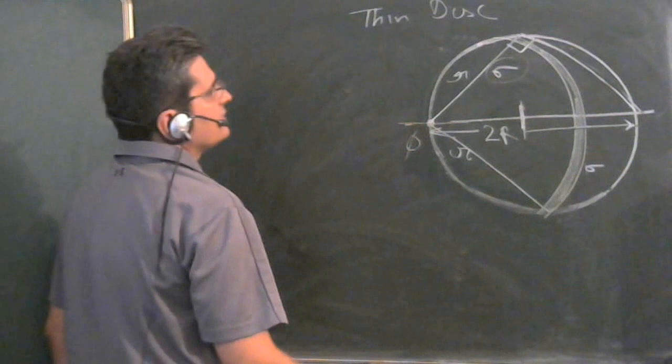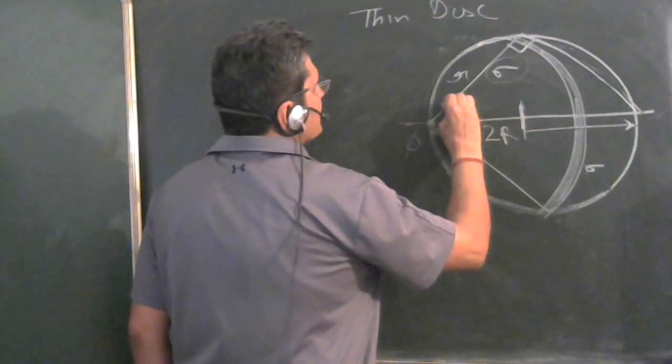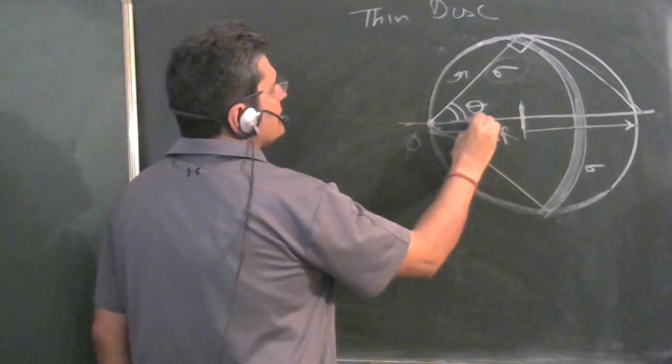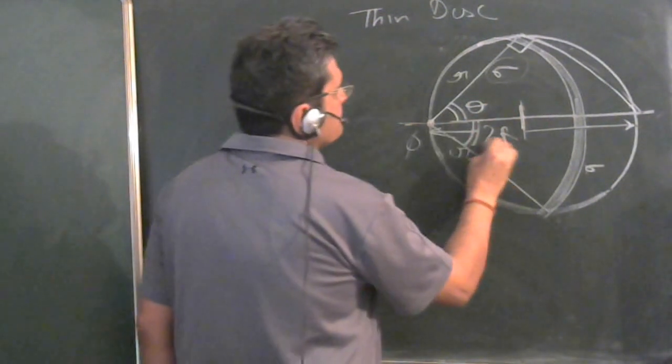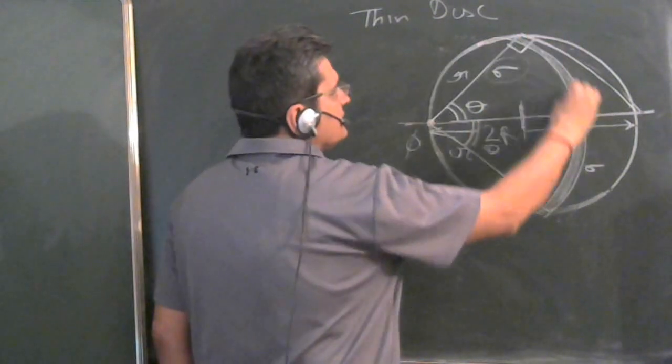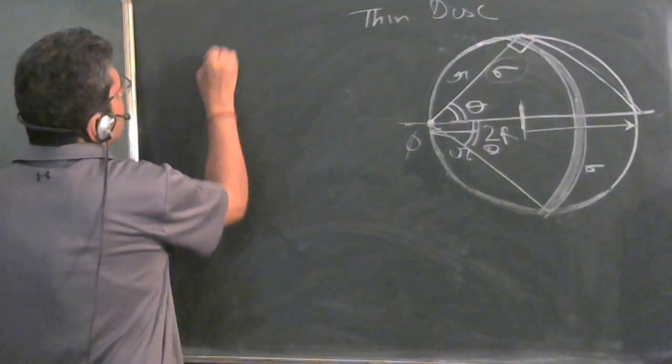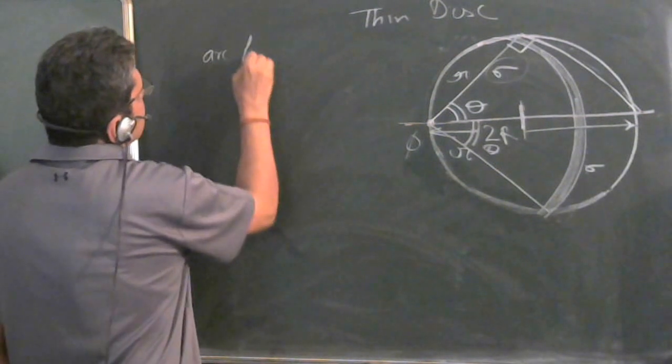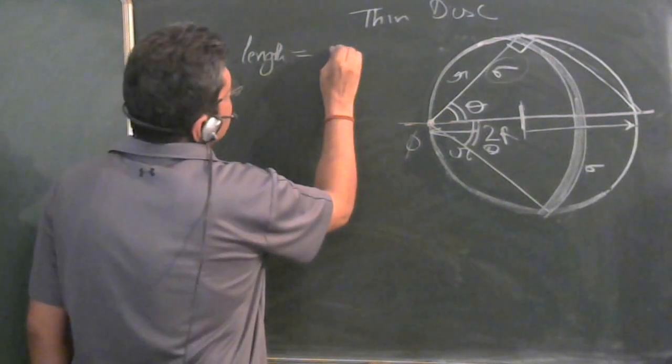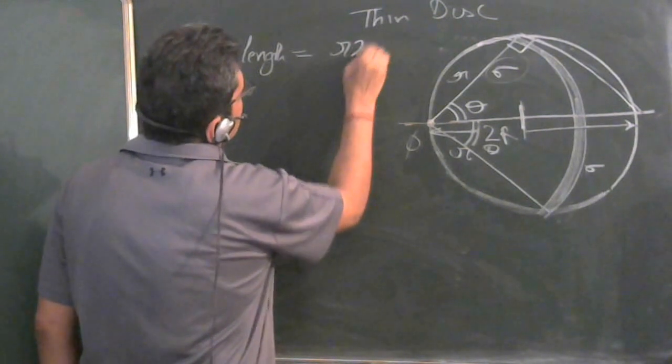This is twice R. Let us take angle theta here and theta will be here, so it is twice theta. What is the length of the arc? The arc length would be equal to R times 2 theta.